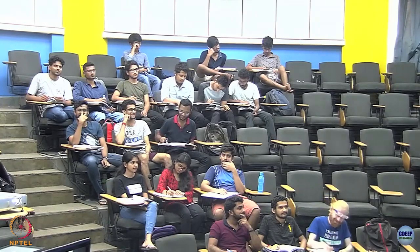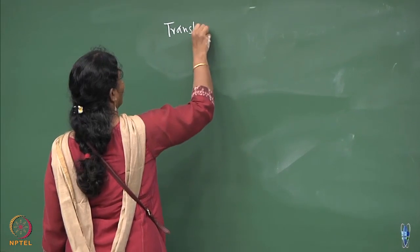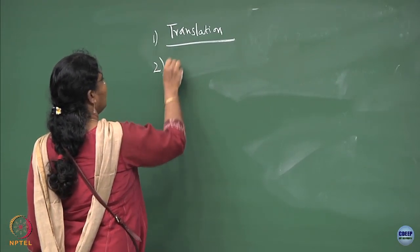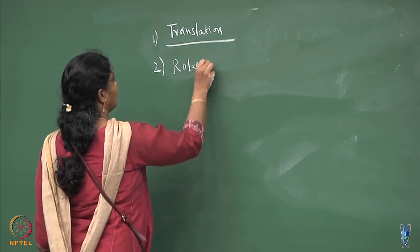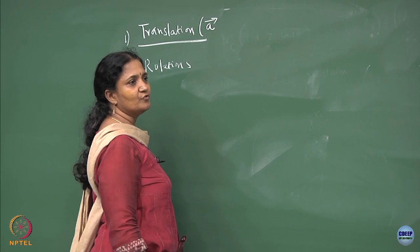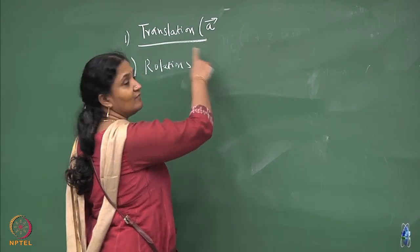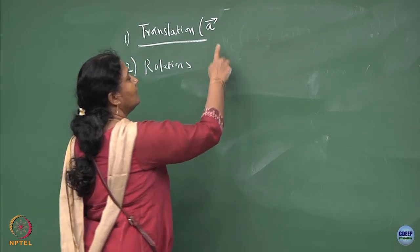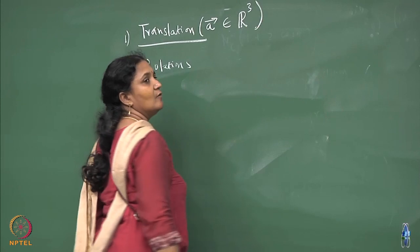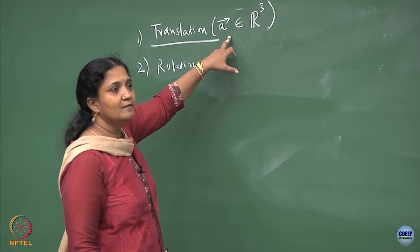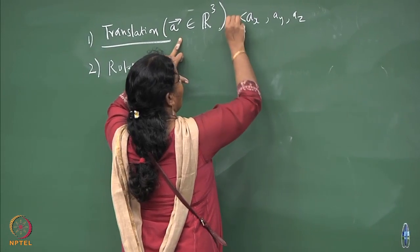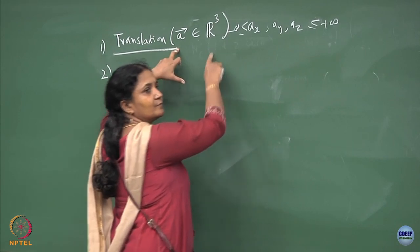We will do a warm-up on translation now, and then a similar thing can be done for rotations. Translation means you translate by a vector a, where a lies in R³ — that is, ax, ay, az can each lie between minus infinity and plus infinity.